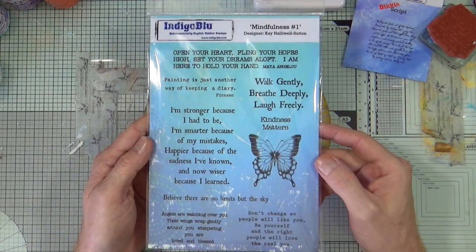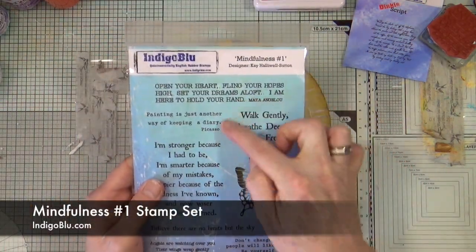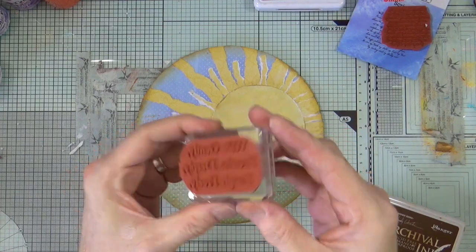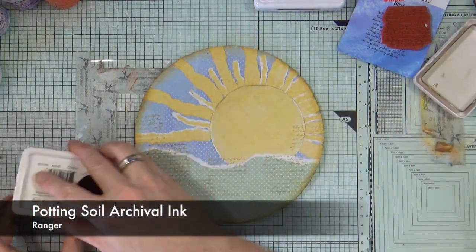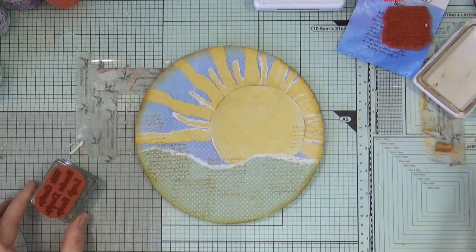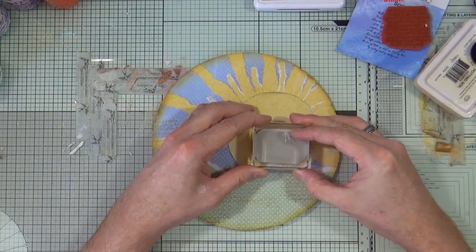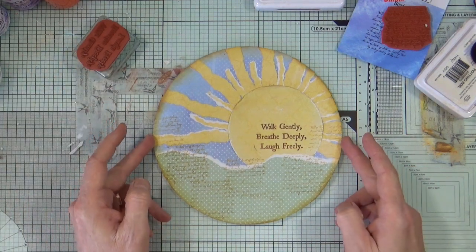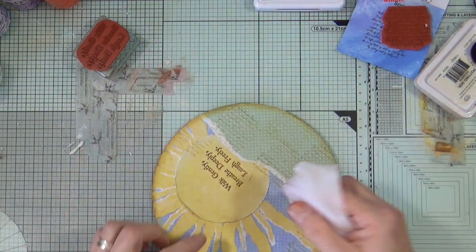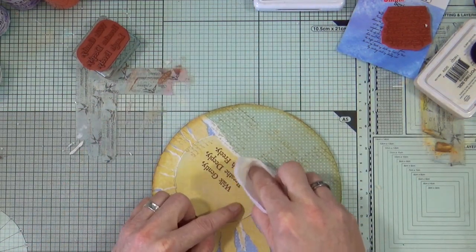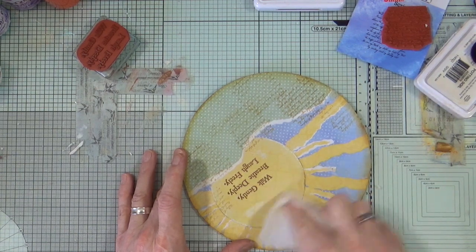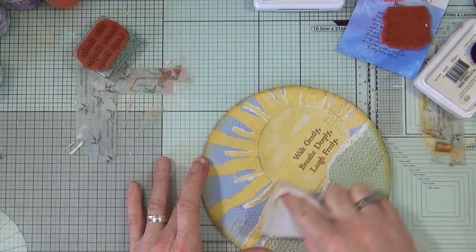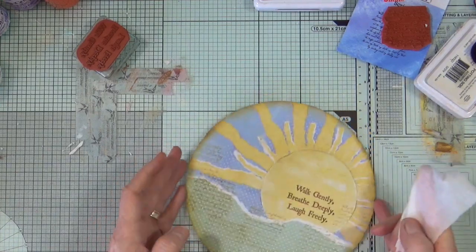Next I want to add my quote for the page, which I'm going to use the Mindfulness Number One stamp set, again from Indigo Blue. I'm going to use the stamp that says 'walk gently, breathe deeply, and laugh freely.' I'm going to stamp this using the Potting Soil archival ink, and I'm actually going to stamp it directly onto the page, directly onto my sun disc. Normally when doing an art journal page we'd stamp onto a separate piece of paper and then cut the word box out and stick those down, but today I wanted to integrate it directly. I did get a little bit of ink on the edge of the stamp, so using a baby wipe I've just rubbed it very gently just to remove it from the page. And while I was there I thought I may as well just use the baby wipe and create a few highlights on the ink, the little pattern of the paper, just to create a kind of cloudy effect.